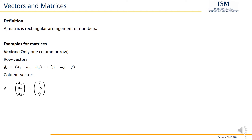Vectors are the same thing as a matrix. So we can either talk about a vector or call it a matrix. A row vector is a 1×3 matrix — one row, three columns — whereas a column vector is a 3×1 matrix — three rows, one column. When you talk about an n×m matrix, it's always n rows and m columns.